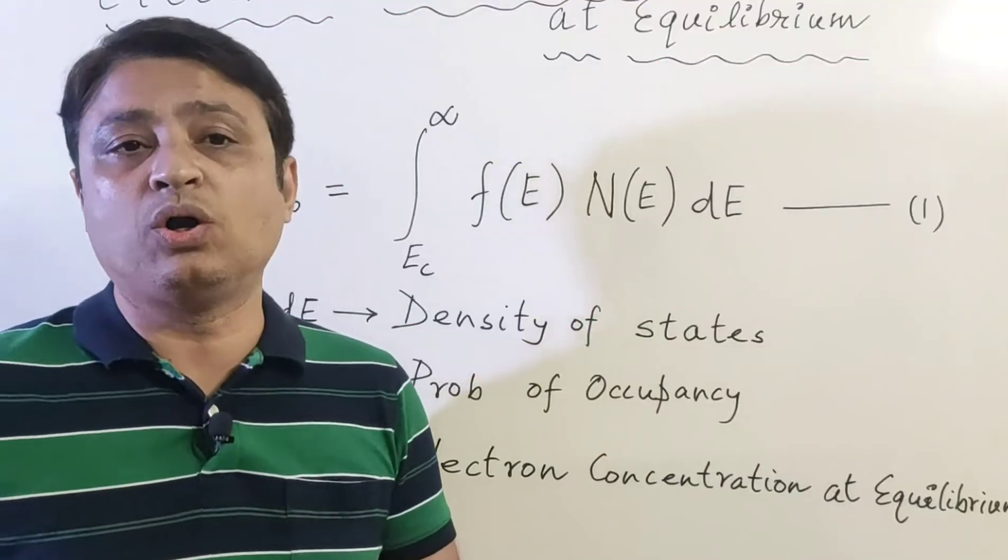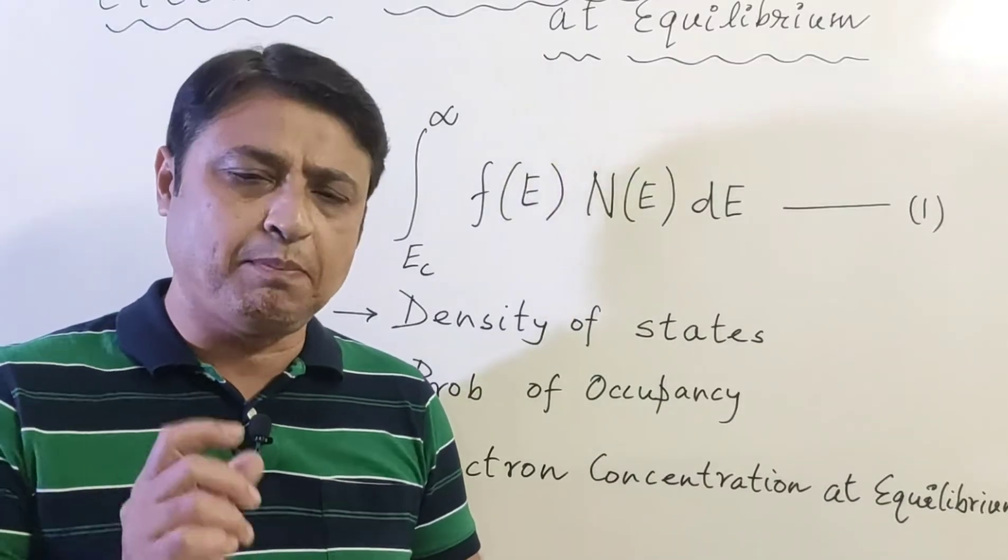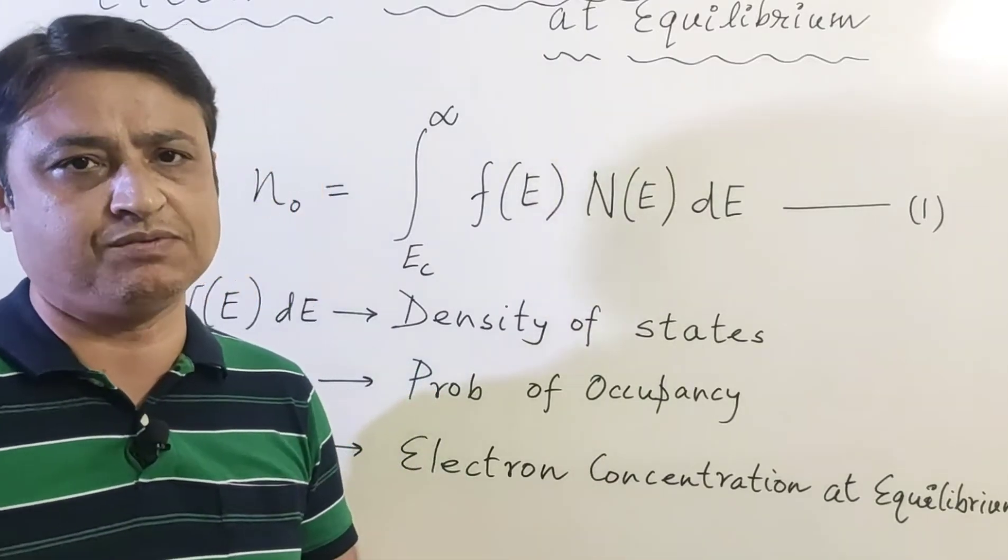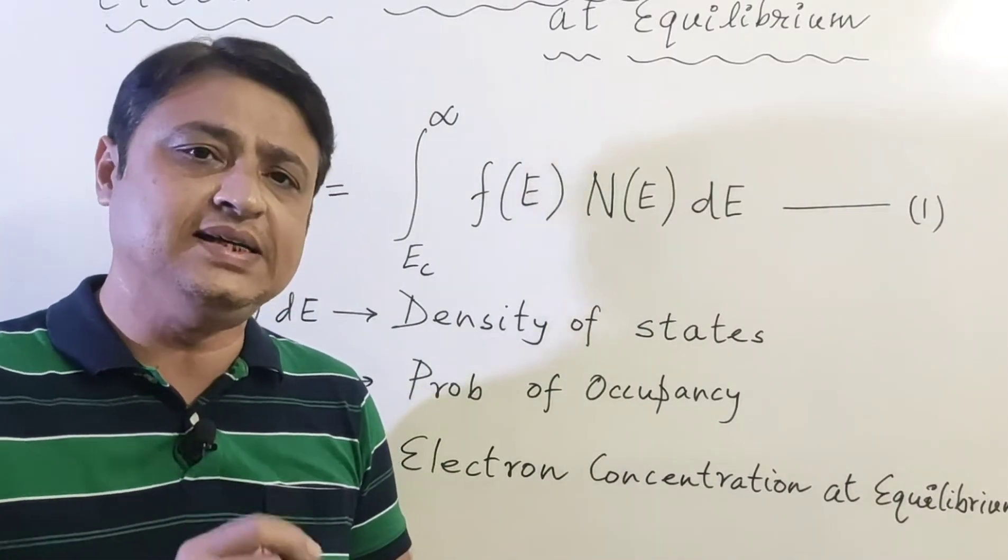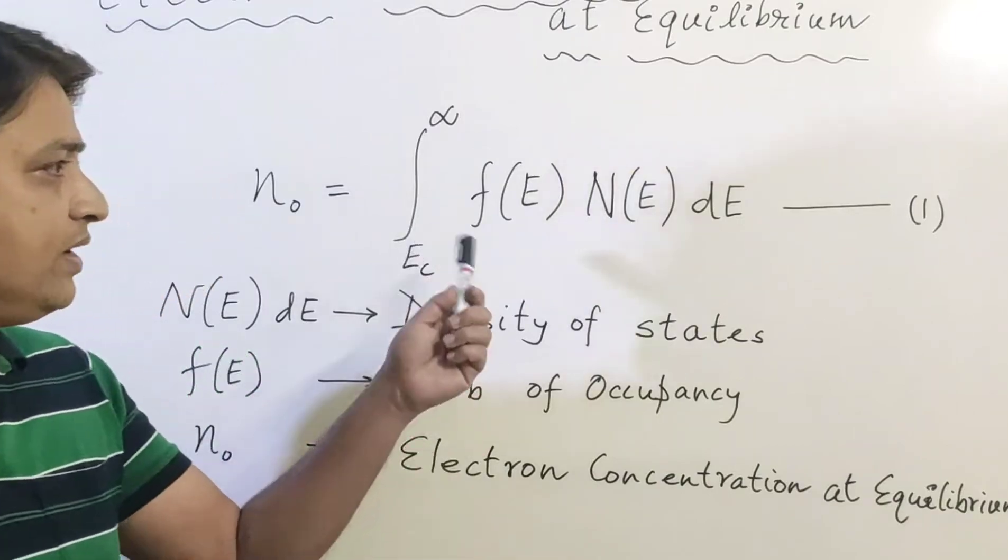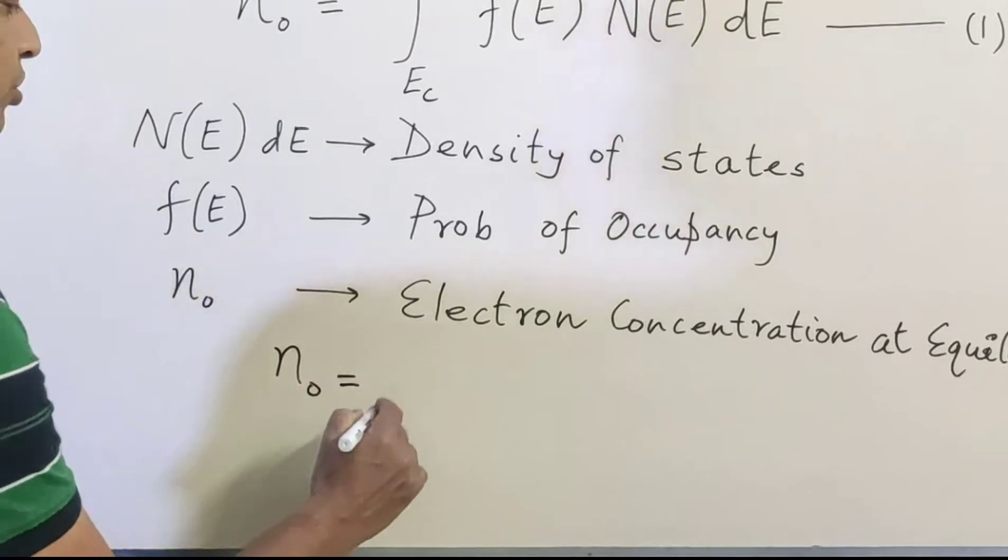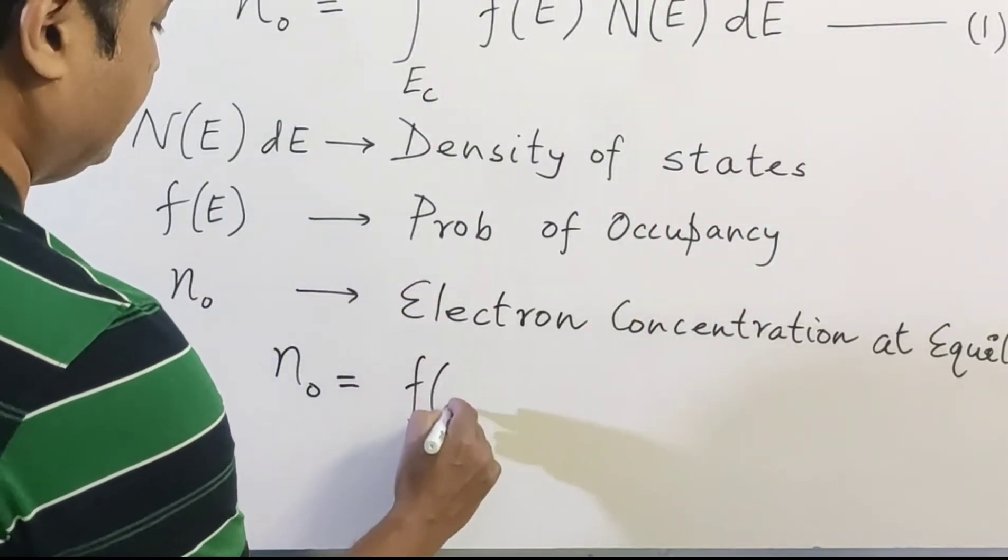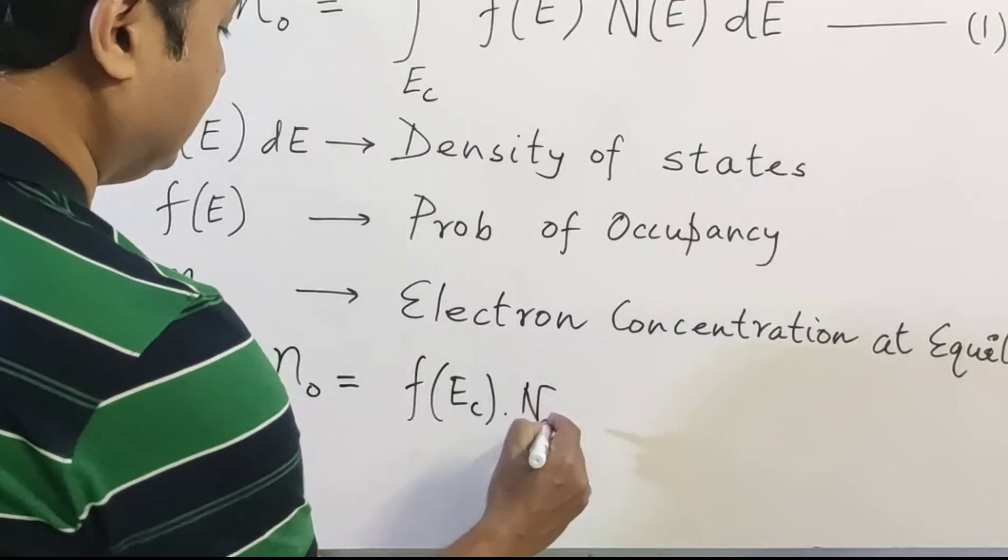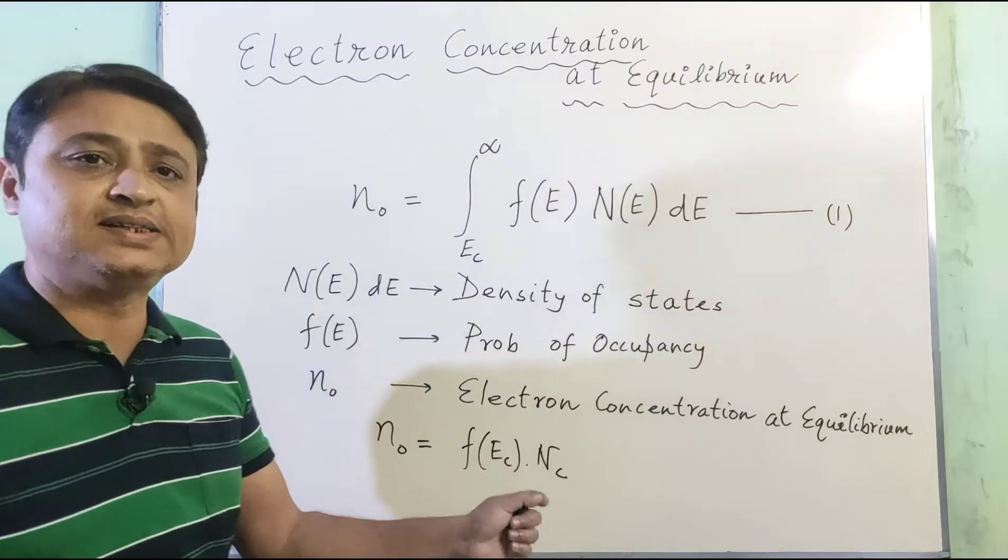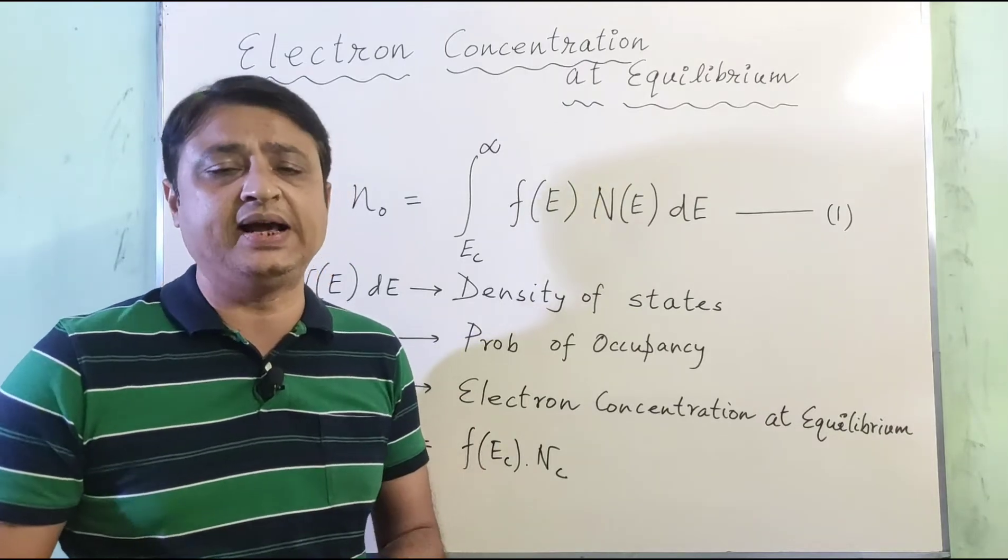If we represent all distributed electronic states in the conduction band by the effective density of states Nc located at Ec, the equation can be written as N₀ = f(Ec) × Nc. This Nc is the effective density of states at the conduction band edge Ec.